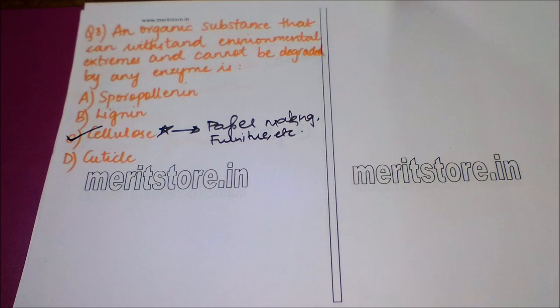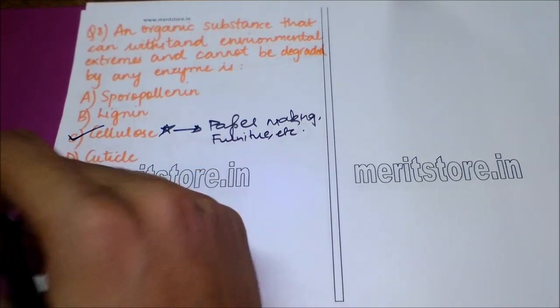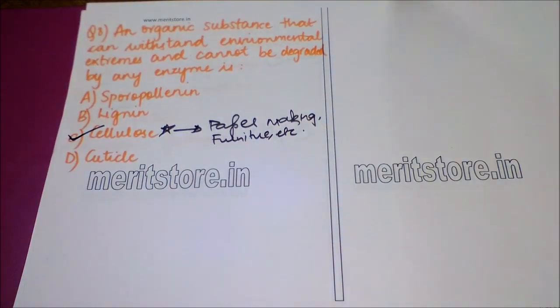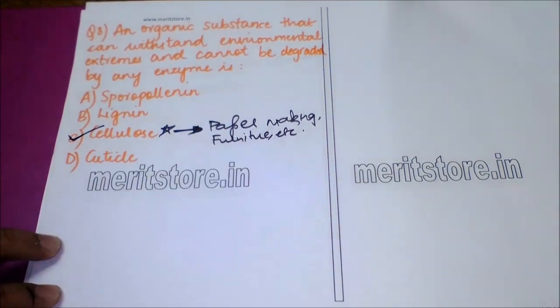The next question is: an organic substance that can withstand environmental extremes and cannot be degraded by any enzyme is which of the following? Option A: sporopollenin. Option B: lignin. Option C: cellulose. Option D: cuticle. The answer given is option C — cellulose — and this property makes it highly useful in applications such as paper making and furniture.